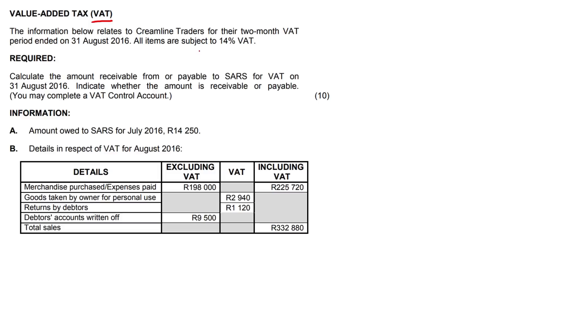VAT, value-added tax. The information below relates to Creamline Traders for their two-month period ended on the 31st of August 2016. All items are subject to 14% VAT.